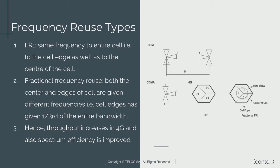To overcome this problem, a frequency reuse of one has been proposed, where each cell has the full system bandwidth. The problem of co-channel interference at the cell boundaries is resolved by dedicating a small chunk of the available spectrum for the cell edges. This is known as fractional frequency reuse.